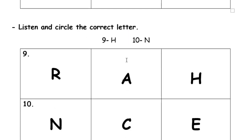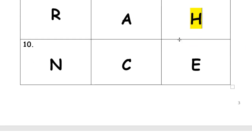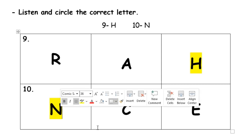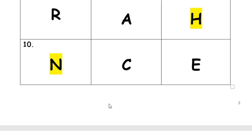We have another two letters in numbers 9 and 10. Number 9, the letter is H. When you hear H, directly go to this letter and circle it. Now I'm highlighting the letter, but in the exam you need to make a circle. Number 10 is N. Where is N? Excellent, this is N. Easy! Yes, I know that is easy for you, and you are excellent students.